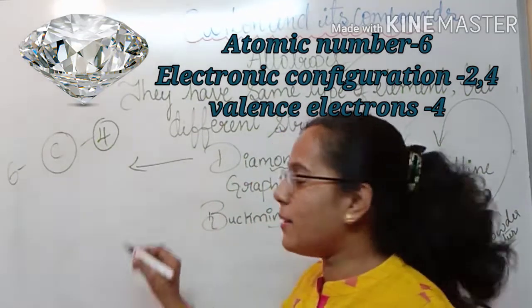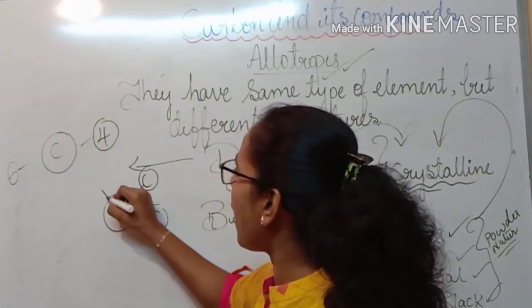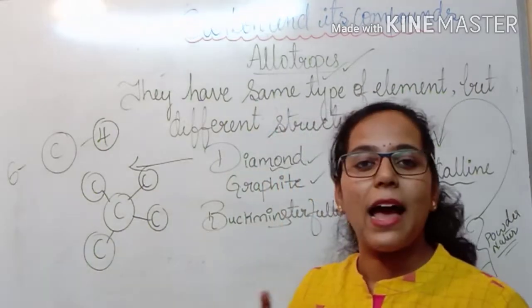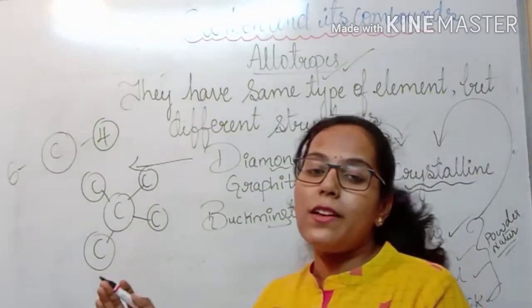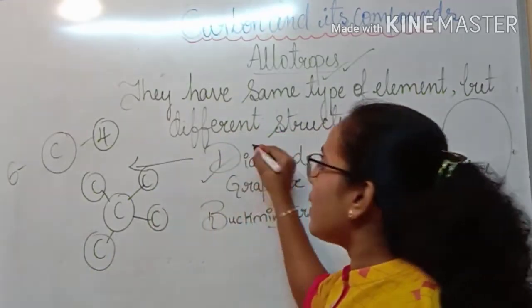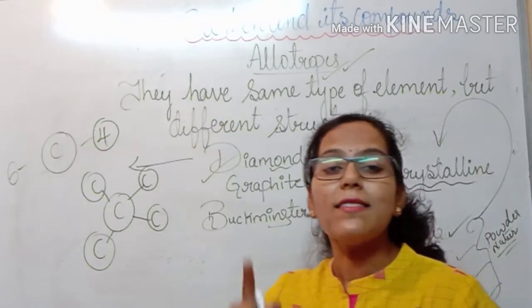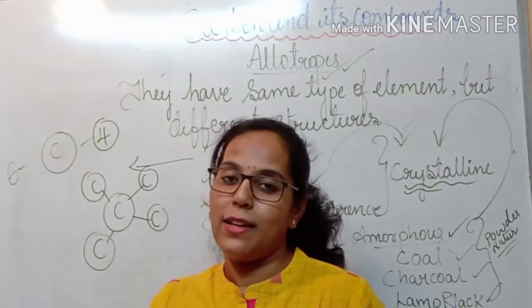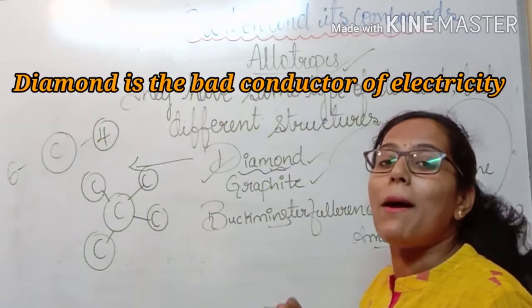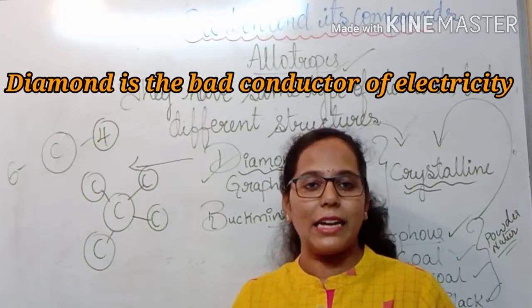So in diamond, each carbon atom is bonded to 4 other carbon atoms. As a result of this, they have a rigid structure and are very hard. Diamond is the hardest substance ever known. When I talk about conductivity, diamond is a poor conductor of electricity — it does not conduct electricity.